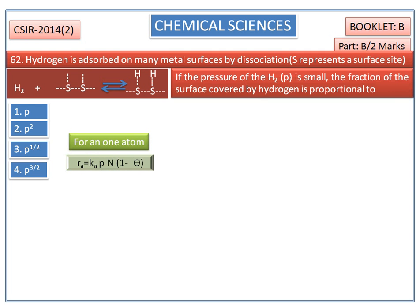θ is the fraction of surface sites occupied. Here we have two atoms of hydrogen molecules. So, ra is equal to Ka into P into N² into (1 minus θ)².